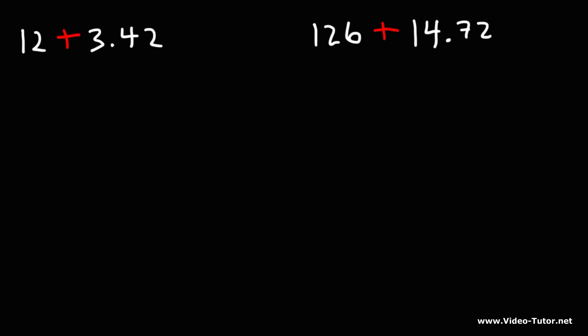Now, let's try the next two examples. Feel free to pause the video if you want to. So what's 12 plus 3.42? The quick way to get the answer is to add the whole number portion, the 12 and the 3. 12 plus 3 is 15. So this is going to be 15.42.